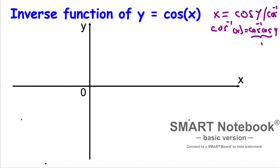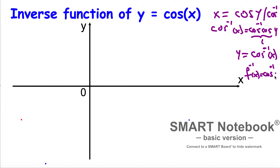As we saw before, inverse cosine times cosine is equal to 1, and 1 times y is equal to y. So y is equal to the inverse function of x. We are exchanging this notation with the inverse notation, and it's going to be the inverse cosine of x. But this doesn't prove a lot, so let's try to draw the function y is equal to cosine x.